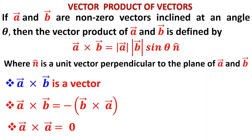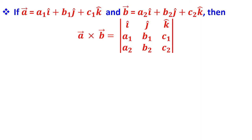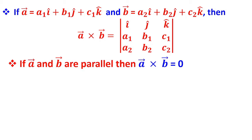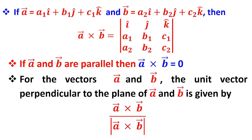If vector a is given as a₁i + b₁j + c₁k and vector b as a₂i + b₂j + c₂k, then a × b is computed using a 3×3 determinant where the first row is i, j, k; the second row is a₁, b₁, c₁; and the third row is a₂, b₂, c₂. Expanding the determinant gives the vector a × b. If a and b are parallel, two rows become identical, so the determinant — and hence a × b — equals zero.